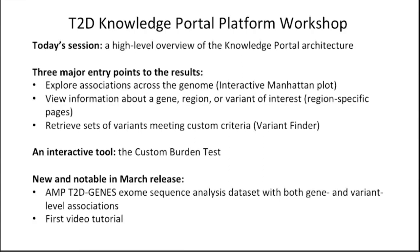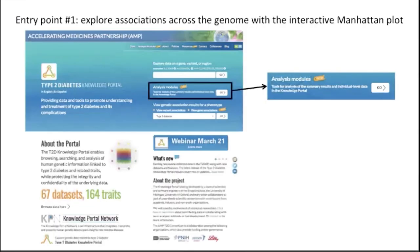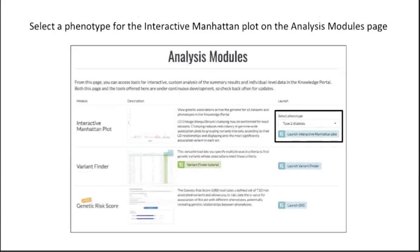I'll give you a very quick tour of one of our interactive tools, the custom burden test. And then I'll briefly touch on a couple of really interesting new things in our March release, which just happened last week. So, entry point number one: you're interested in some trait and you want to see what the genetic results are for it. To do this, you would start at the homepage, and the new Analysis Modules link takes you to a new page that gathers all the tools we have. That's where you get to the interactive Manhattan plot, and on this page you can select a phenotype and launch the plot.